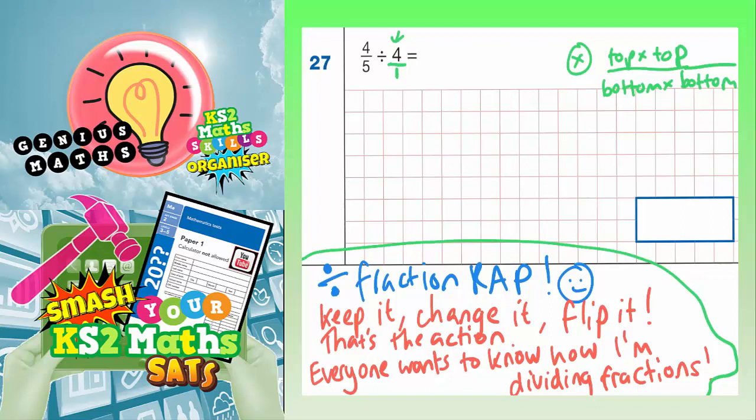And this is what it means. Keep it, so this bit means you keep the first fraction. So this 4 fifths, we're just going to keep it as it is. So 4 fifths is going to stay as 4 fifths.